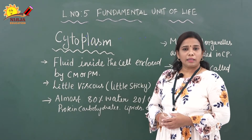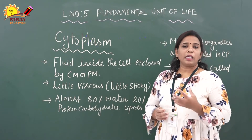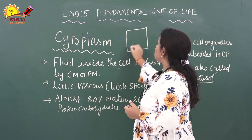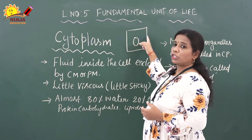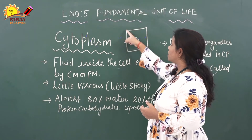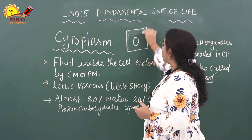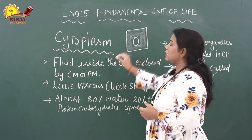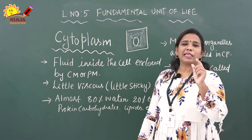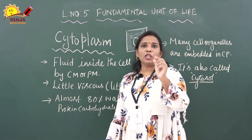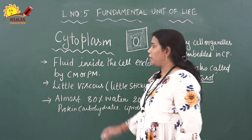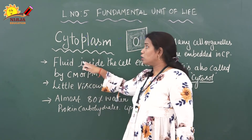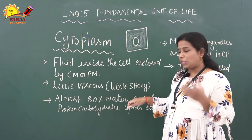There is a semi-solid liquid present inside the cell called cytoplasm. The cytoplasm is present between the nucleus and the plasma membrane. You can see in the image — this is the nucleus, this is the plasma membrane, and the cytoplasm is the area in between. The cytoplasm is semi-solid and slightly viscous in nature. Viscous means slightly sticky — like the feeling when you touch honey.